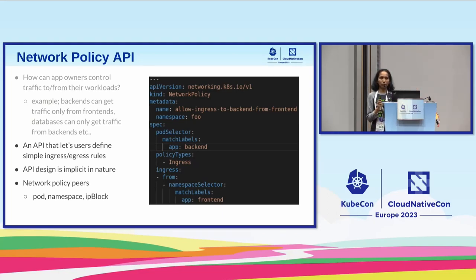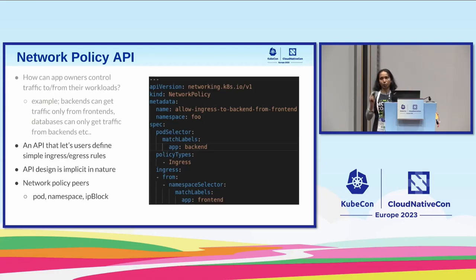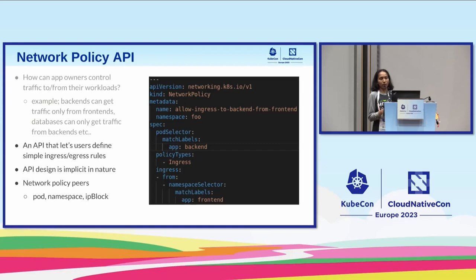The ingress and egress rules are explicit and complement each other. When you create a network policy, everything works until you create the policy — but as soon as you create it, everything stops working. There's a default deny created, and on top of that you have allow rules. If you're creating only an ingress policy, egress is allowed by default, and vice versa. The API design is a bit implicit in nature because you don't really expect that default deny — you just said what you want to allow, but you also implicitly get 'deny everything else.'